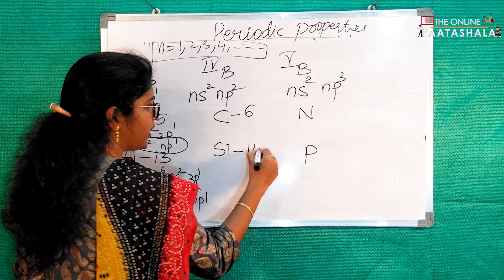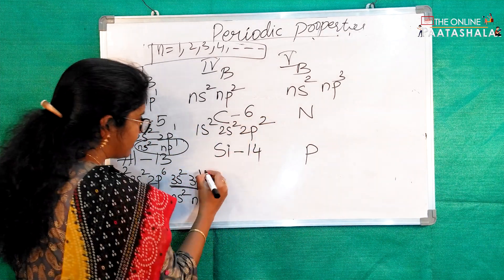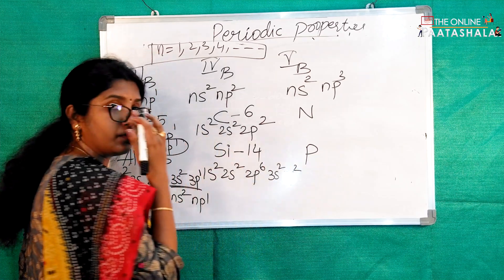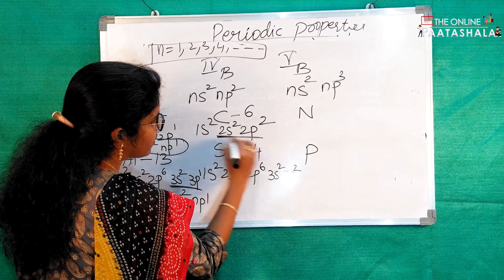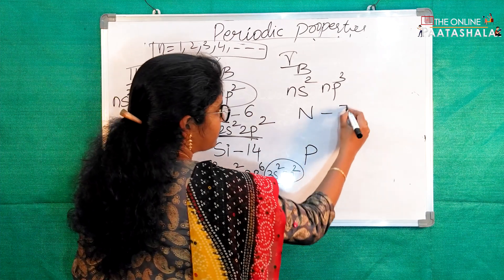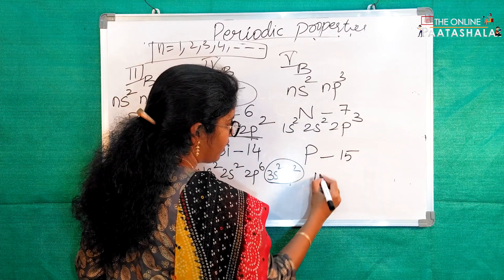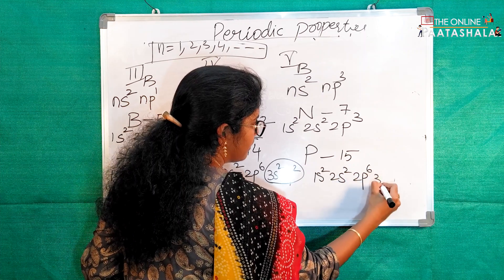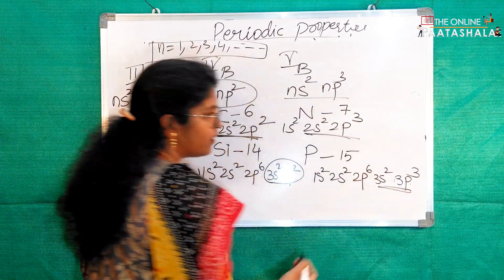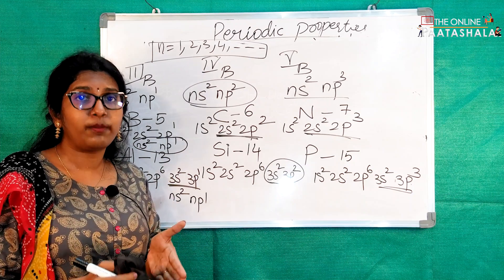Carbon (atomic number 6): 1s2, 2s2, 2p2. Silicon (atomic number 14): 1s2, 2s2, 2p6, 3s2, 3p2 — both fitting ns2, np2. Similarly, Nitrogen (atomic number 7): 1s2, 2s2, 2p3, and Phosphorus (atomic number 15): 1s2, 2s2, 2p6, 3s2, 3p3 — both fitting ns2, np3. This confirms the general electronic configuration pattern for each group in the periodic table.